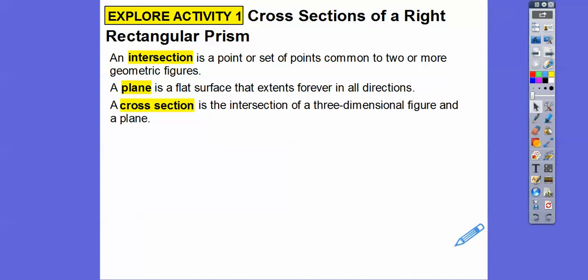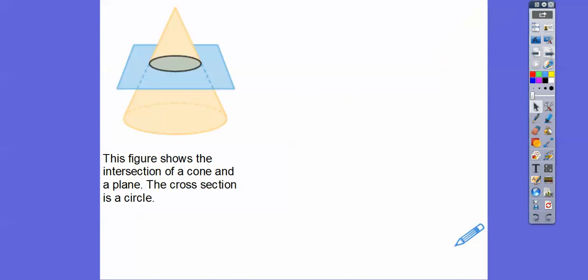A cross-section is the intersection of a three-dimensional figure — like a basketball, a box, or a pyramid, or cylinders which are cans — and a plane. So when you slice a plane through a three-dimensional figure, that gives us a cross-section. Just imagine a plane slicing through three-dimensional figures.